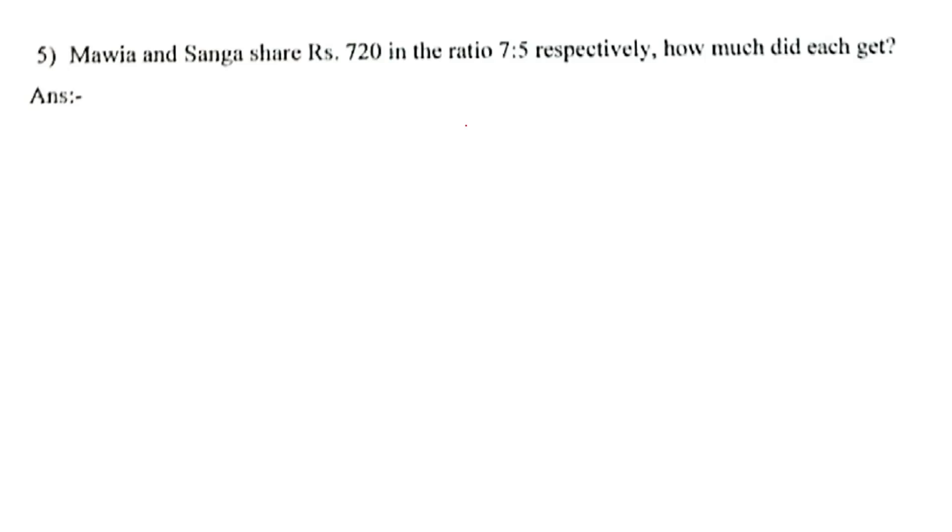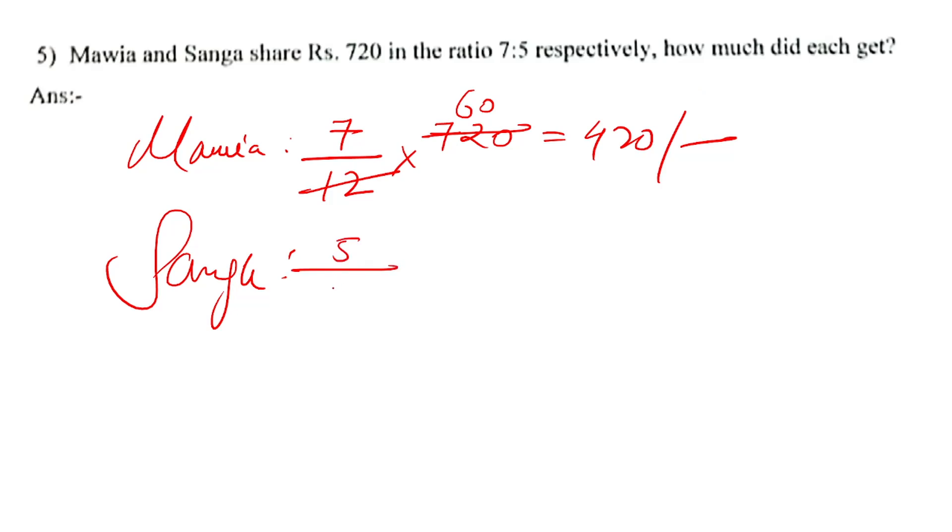Next question: Moya and Sang share 720 in the ratio 7 is to 5. How much did each get? Moya's part is 7 out of 12 total parts. So Moya gets 7/12 times 720, which equals 420. Sang gets 5/12 times 720, which equals 300.